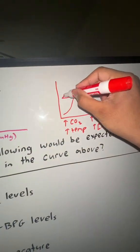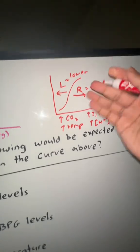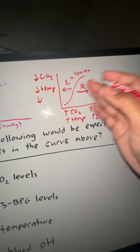Now, the opposite of it will just be a left shift. A left shift equals lower. So everything will be lower, like low CO2, low temperature, low everything else. It's going to be the opposite.